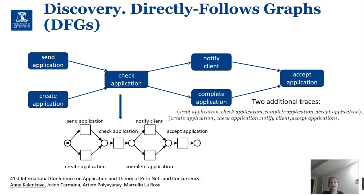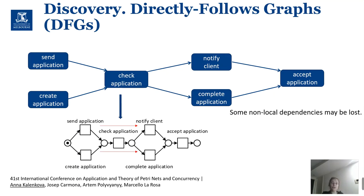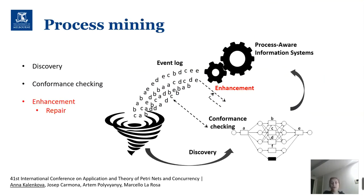This free choice Petri net accepts two additional traces. For instance, we can complete the application after it was sent by the client, but this is not supported by the initial process because if the client sends an application, that means the application is already filled and there is no need to add additional information. So in some cases it might be feasible to construct a more precise model. The main idea of our approach is to take the skeleton model constructed by a fast discovery algorithm that mines only free choice constructs and to enrich it with additional long-distance dependencies, presenting an enhancement algorithm that enhances this model with additional constraints.